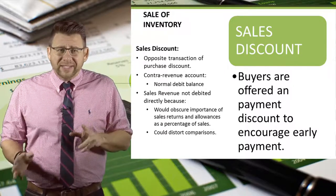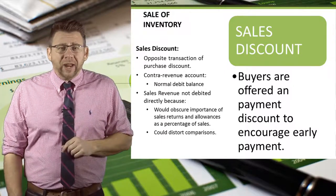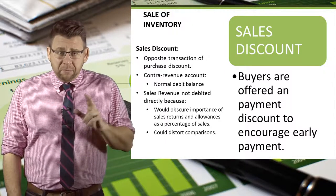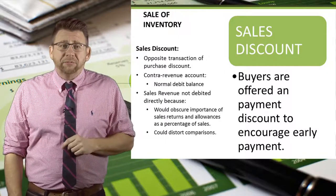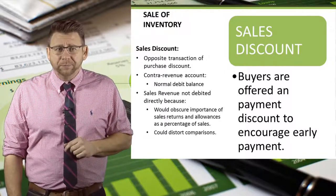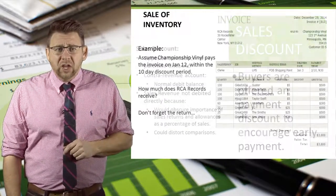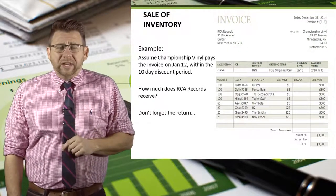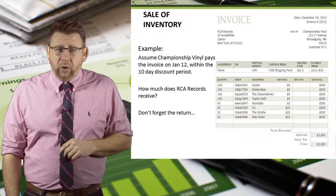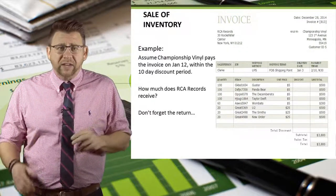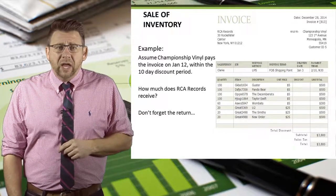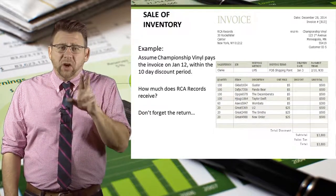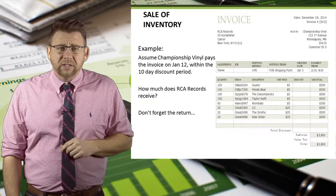If we were to debit sales revenue directly, it might distort the revenue numbers and make it difficult for managers to track discounts. So assume Championship Vinyl pays the invoice on January 12th, which is within the 10-day discount period. How much are they going to pay RCA Records?